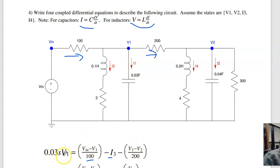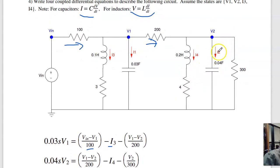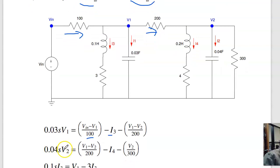What's left over is I1, which is C dV/dt. For capacitor 2, I2 is C dV/dt. That's equal to the current from the left, (V1 - V2)/200, minus I4, minus this current, minus V2/300.